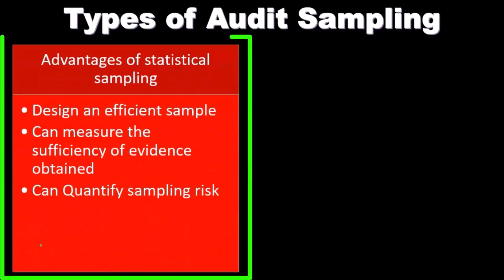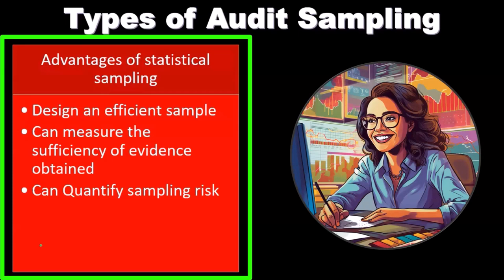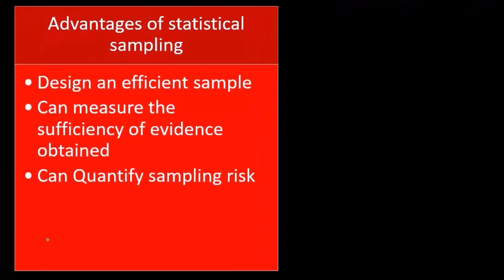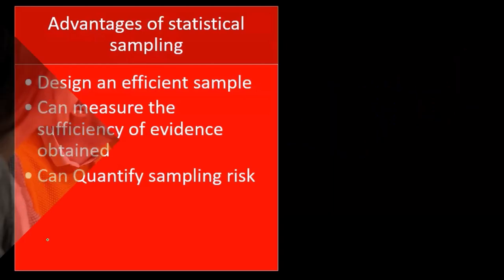The advantages of statistical sampling include being able to design an efficient sample. When we think about sample size, we want to create as small a population as possible to do the least work necessary. For example, if you're polling people to get the population's opinion on something, you'd like to poll as few people as possible while still getting an accurate result. That's what statistical sampling is better at — giving us a very efficient sample size.